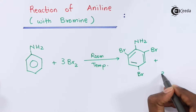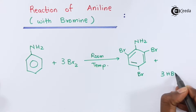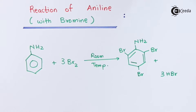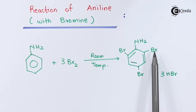Three moles of HBr are produced as a byproduct. This process is known as bromination via electrophilic substitution. Three moles of bromine are used because the NH₂ group is a strong activating group, so bromination does not stop at the mono-halogen derivative — it happens at all ortho and para positions, making a tri-bromo derivative.